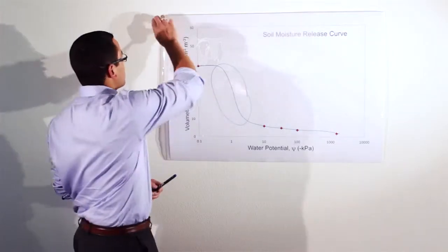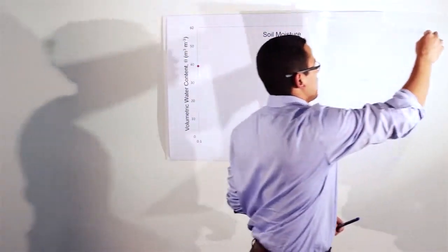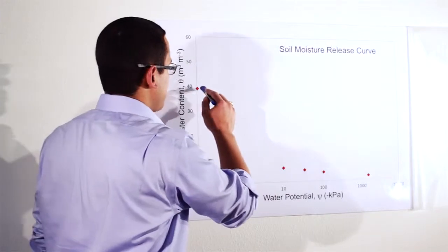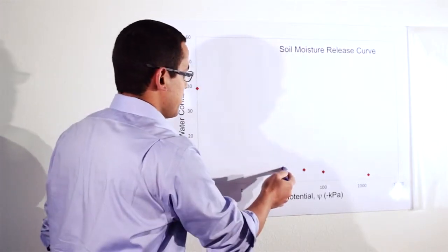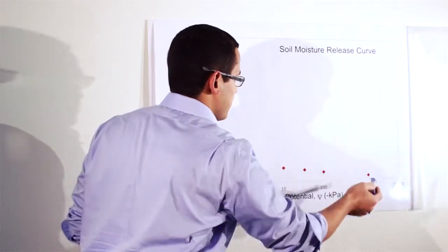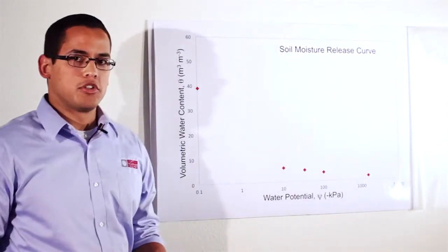But if you look at this model, the curve is based on these five data points: your saturation point, your 10 kPa, your 33 kPa, your 1 bar, and your 15 bar point when measured using pressure plates.